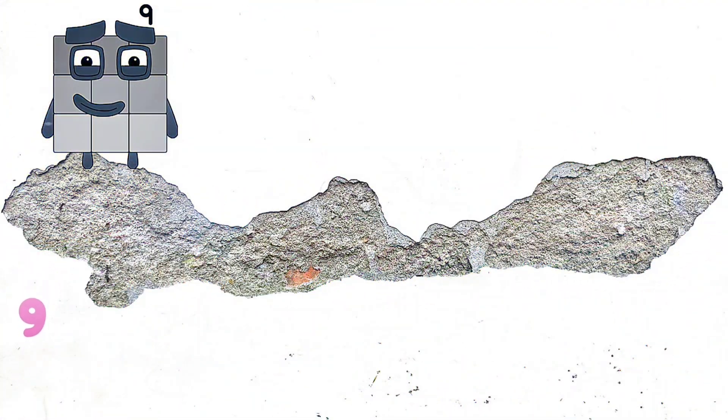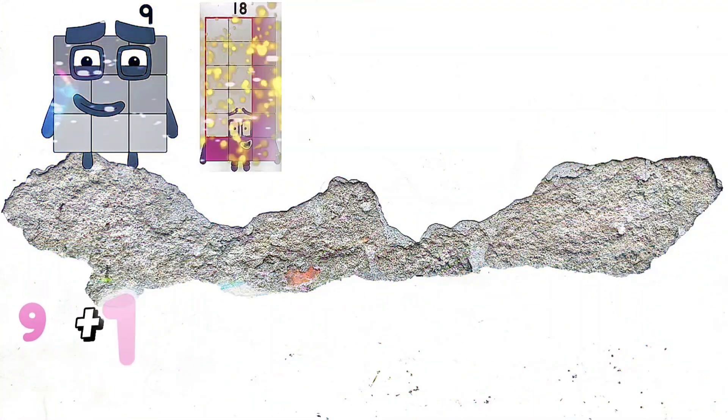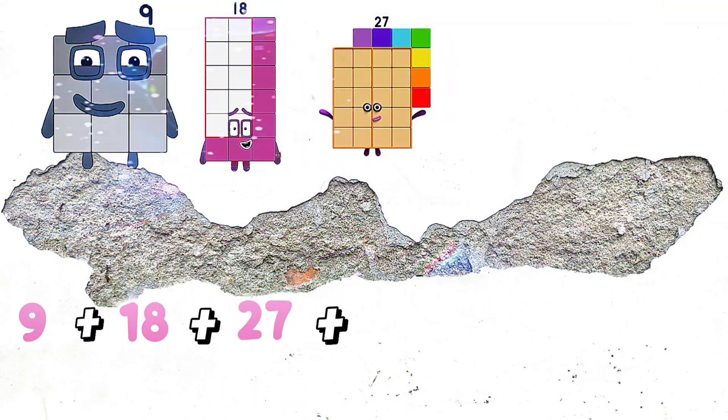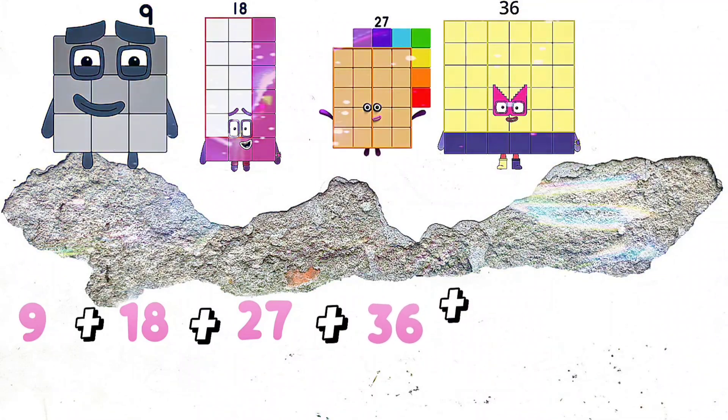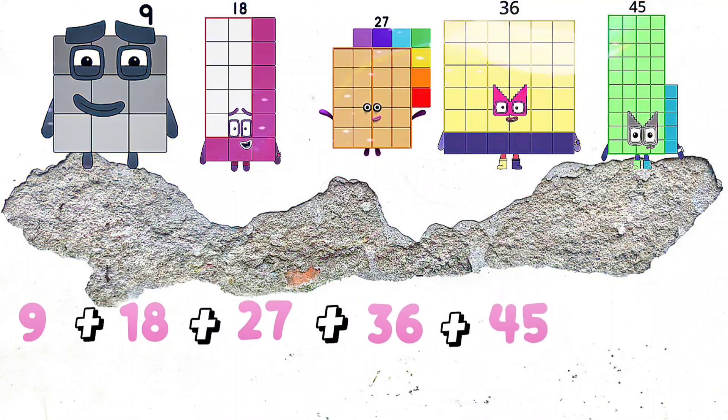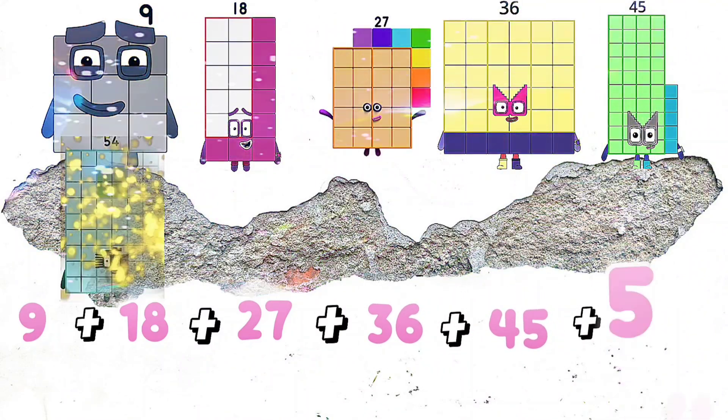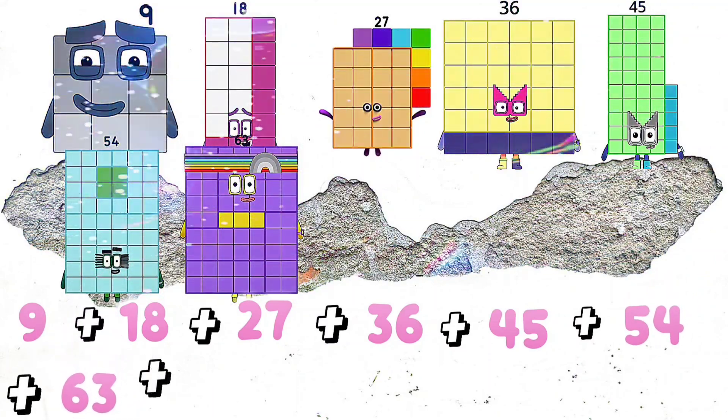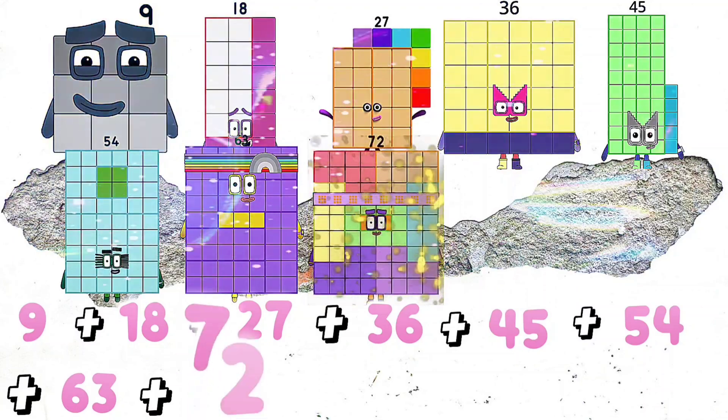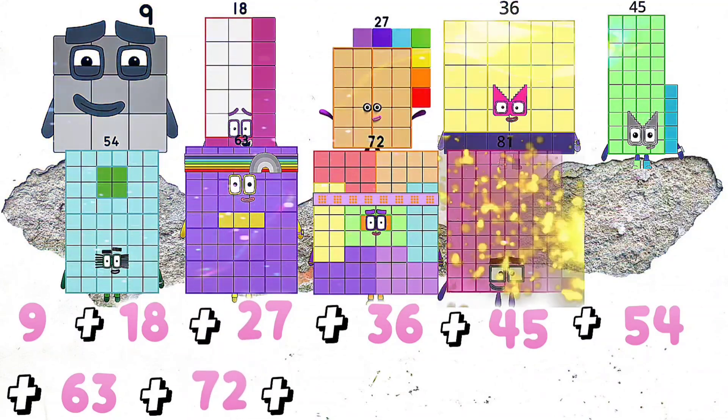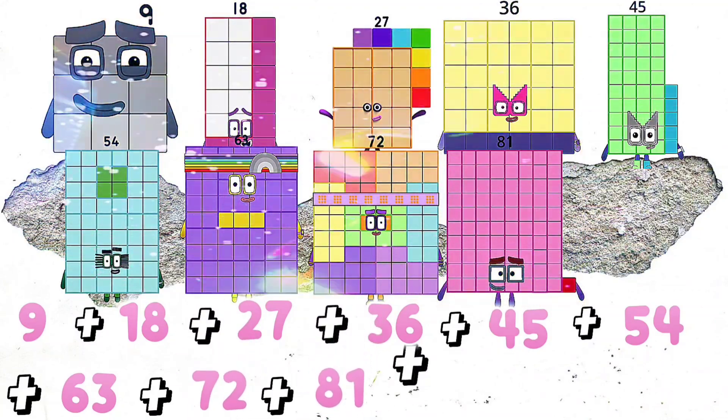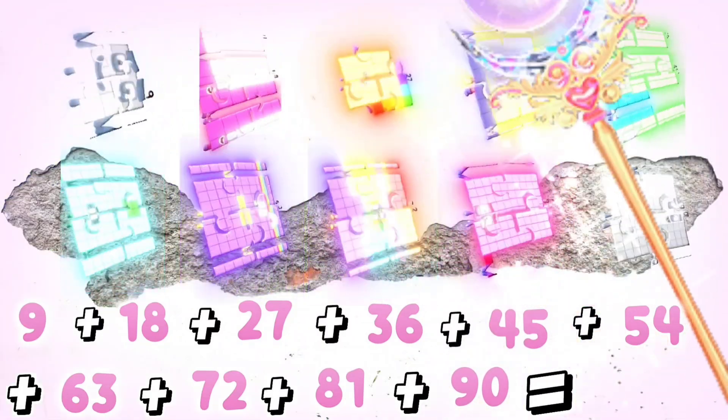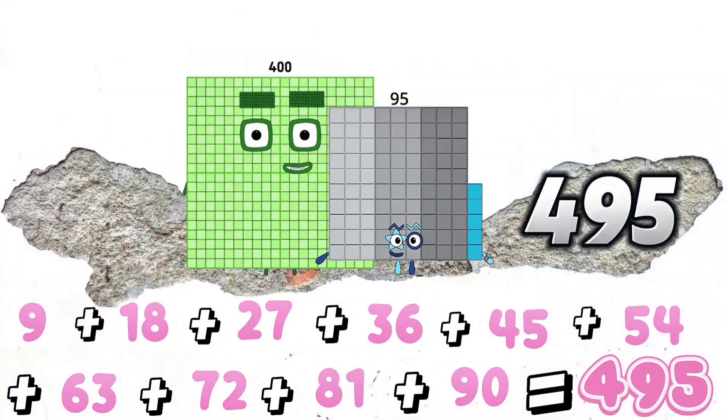9 plus 18 plus 27 plus 36 plus 45 plus 54 plus 63 plus 72 plus 81 plus 90 equals 495.